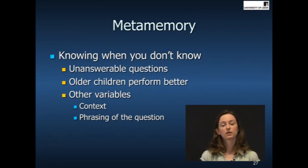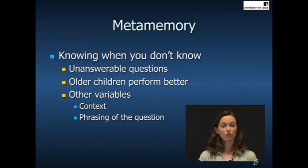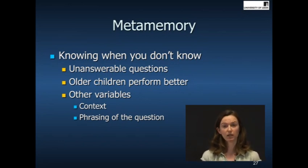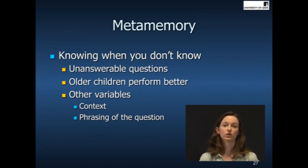So, for example, we might ask the child what colour were the socks that the lady was wearing, but the lady was wearing boots, so they were unable to see the socks. And what we look at is whether children are likely to correctly admit when they do not know the answer to a question. In lots of studies using this sort of test, we found that older children are much more likely than younger children to admit when they do not know the answer.